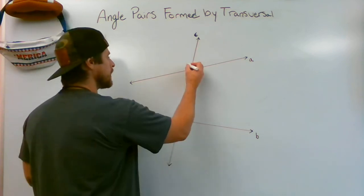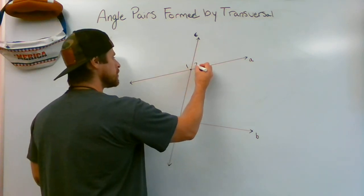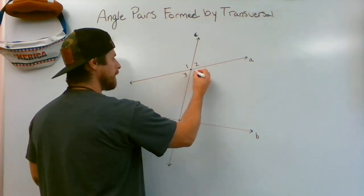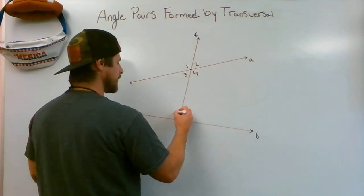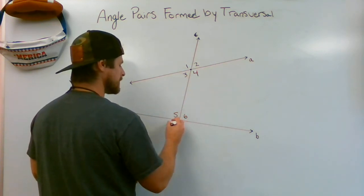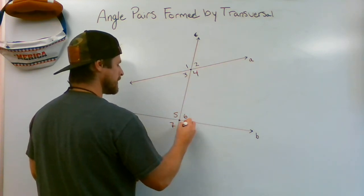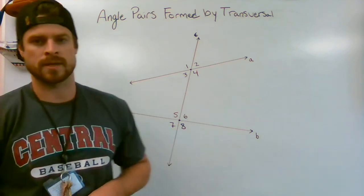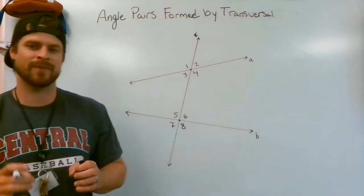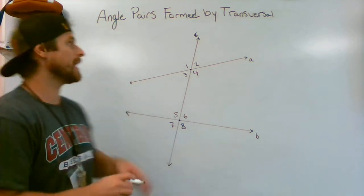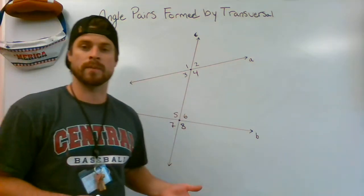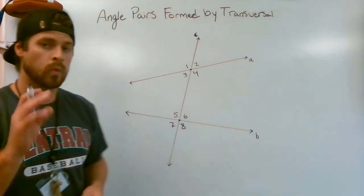A transversal is going to create eight different angles, and we have specific names that we call angle pairs that are formed by a transversal.